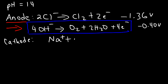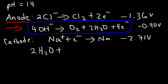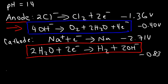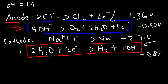What about the cathode under basic conditions? The reduction of sodium will not occur — the cell potential is simply too high at negative 2.71 volts. Instead, under basic conditions water can receive electrons and turn into hydrogen gas plus two hydroxide ions, with a cell potential of negative 0.83 volts. It is a lot easier to get this reaction going than the sodium reduction. So under basic conditions we're going to have these two reactions: hydroxide oxidation to O₂ at the anode and water reduction to H₂ at the cathode.